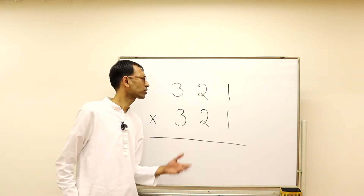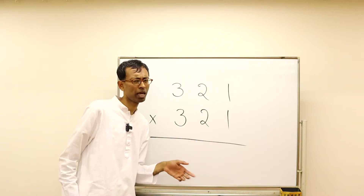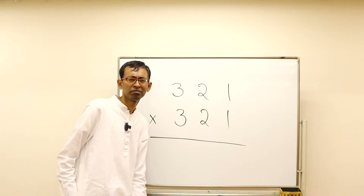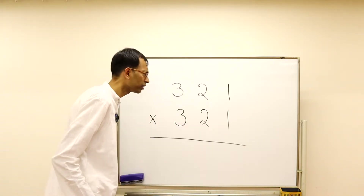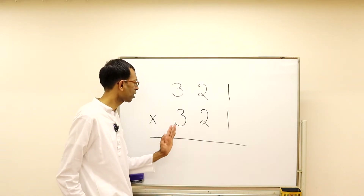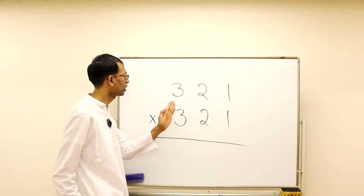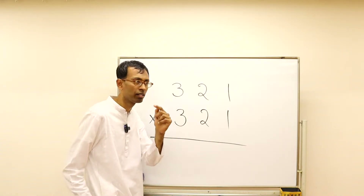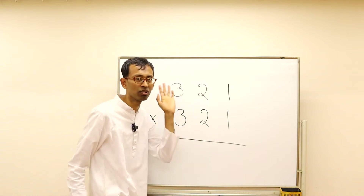Pause the video and try this multiplication by yourself — maybe you can do it in your mind. Shall we do this together? We start from the left. First: three times three is nine. Nine is the number in mind.